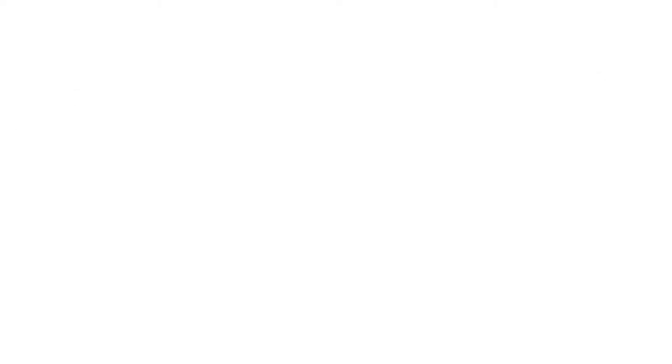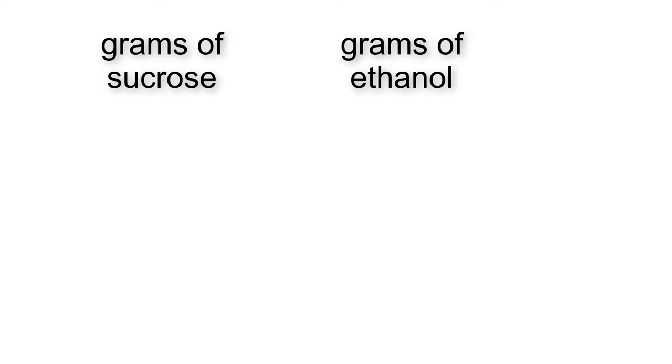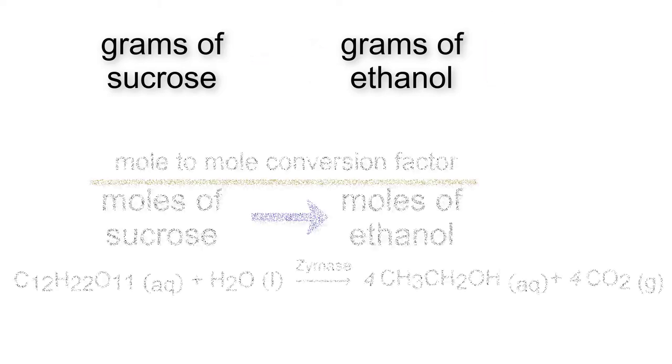Now we are ready for our second step. For this step, I recommend writing out the units first to make sure they cancel out before doing any math. With that said, we will start by writing grams of sucrose and what we are ending with, which is grams of ethanol. We need to ask ourselves: how do we go from grams of sucrose to grams of ethanol? The key to this is going to be our mole-to-mole conversion factor, which we get from our balanced chemical equation.